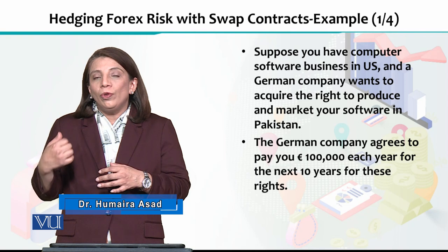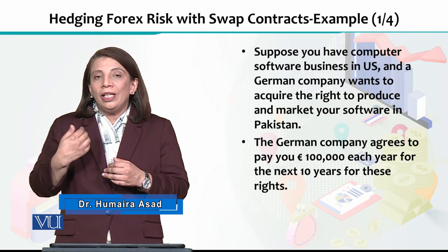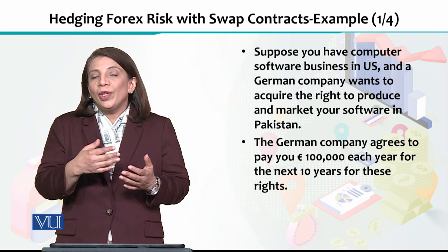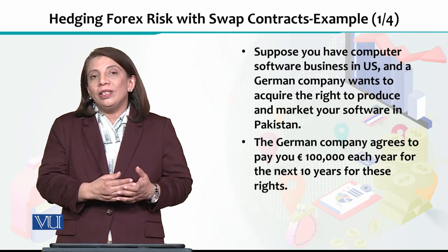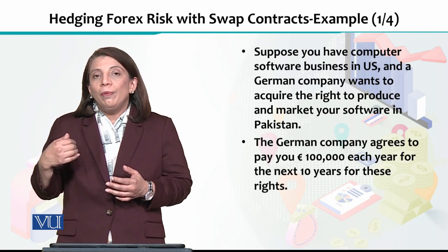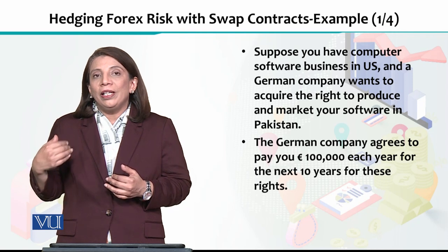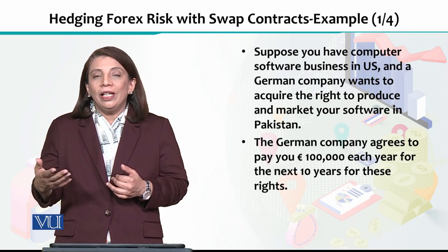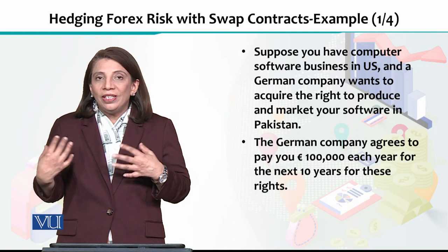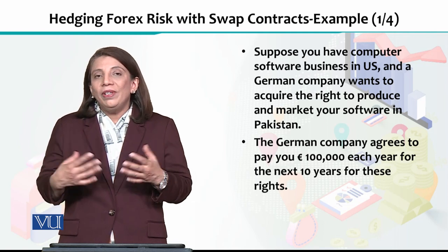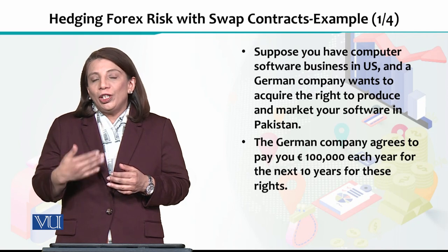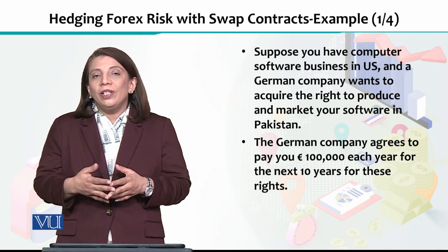The German-based company will pay some software to buy from the US-based company. The currency used in the USA is US dollars, and the German company has planned to pay in euros. Because there are two types of currencies involved, over time there could be fluctuations in the foreign exchange rate.